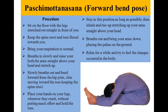Paschimottasana, Forward Bend Pose. Procedure: Sit on the floor with legs stretched out straight in front of you. Keep the spine erect and toes flexed towards you. Breathe in slowly and raise both arms straight above your head and stretch up. Slowly breathe out and bend forward from the hip joint, chin moving towards the toes while keeping the spine erect. Place your hands on your legs wherever they reach and hold the toes. Stay in this position as long as possible, then inhale and rise up stretching your arms above your head. Breathe out and bring your arms down, placing palms on the ground.